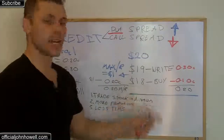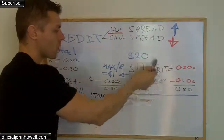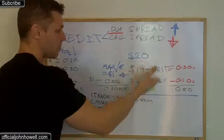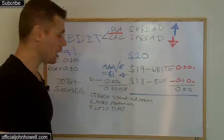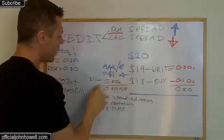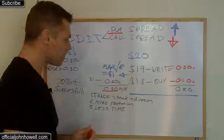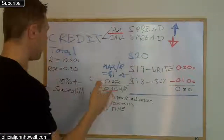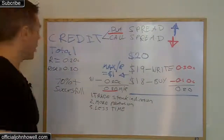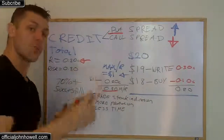So 20 cents is our reward. Now let's look at our maximum risk — that's the distance between the written option and the bought option. The spread is between $19 and $18, so our maximum risk is $1. We received 20 cents, so $1 minus 20 cents equals 80 cents. That 80 cents is now our maximum risk. This is the reason why this strategy can be one of the most risky ways to trade the markets.